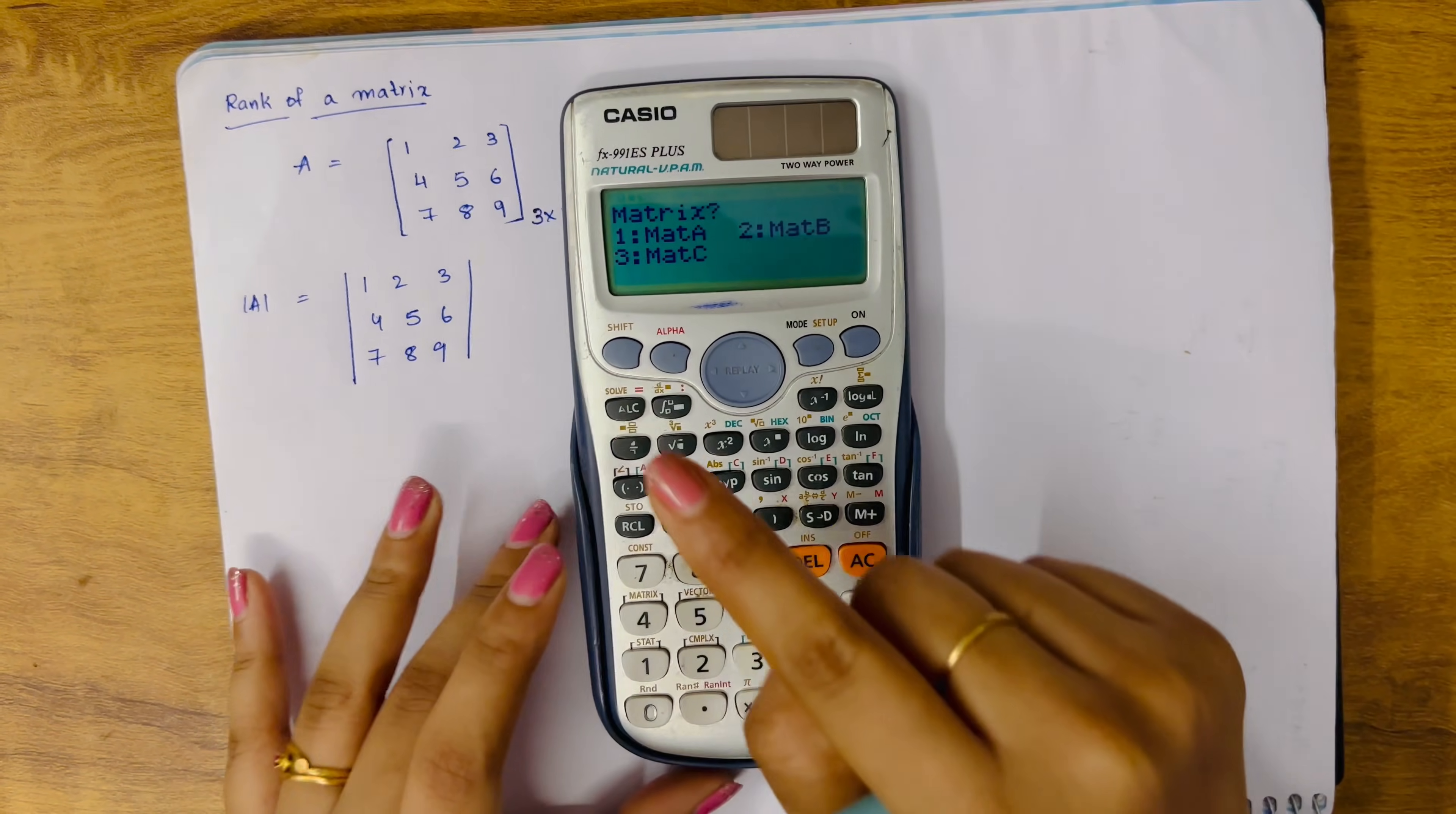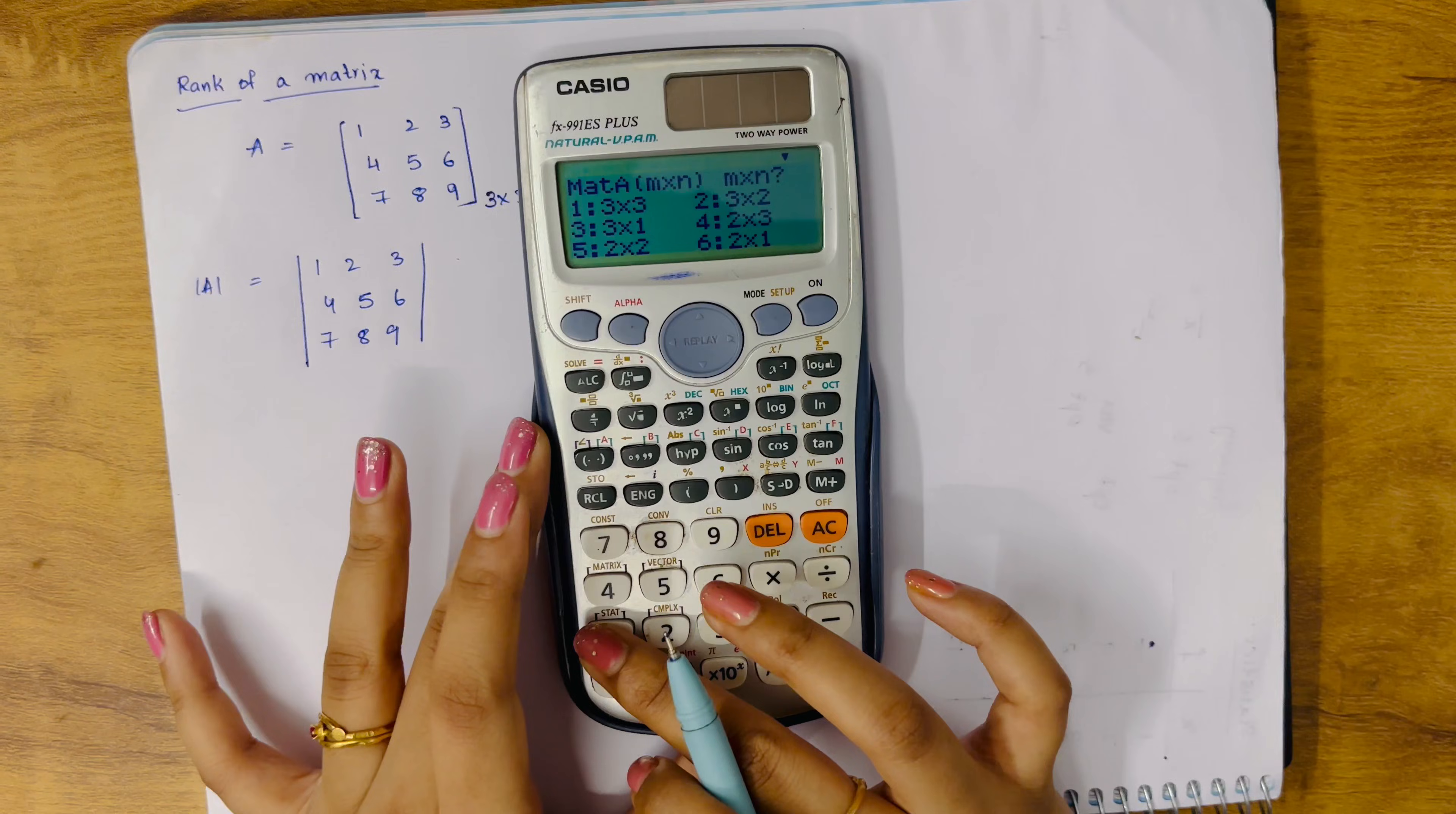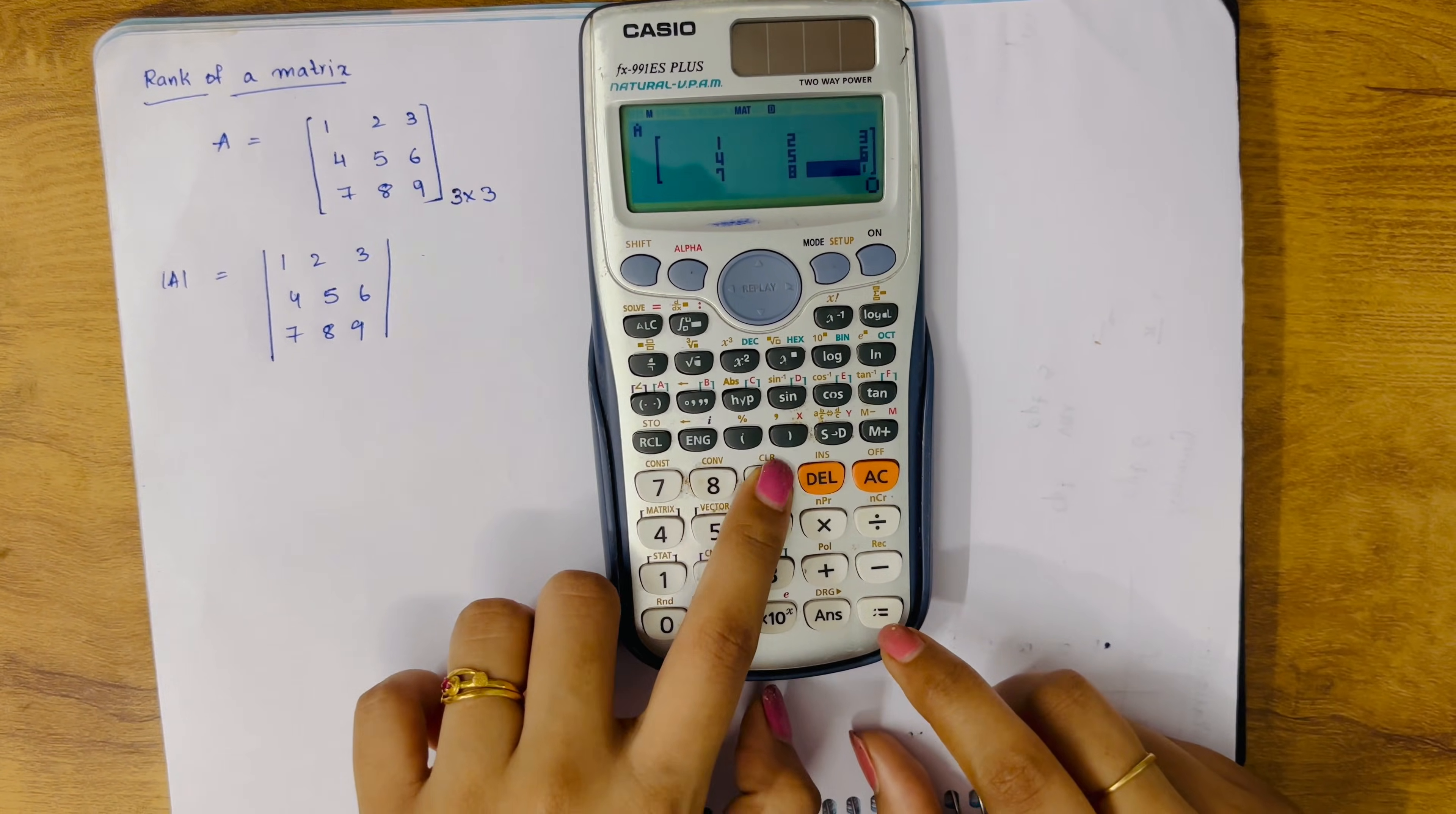Defining a matrix Mat A. Now it is a 3 by 3 matrix, right? So press on option 1. Now enter the matrices: 1, 2, 3, 4, 5, 6, 7, 8, 9.